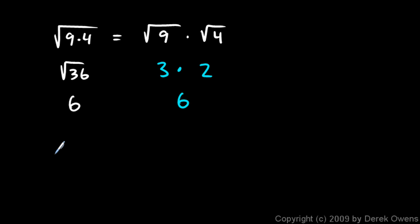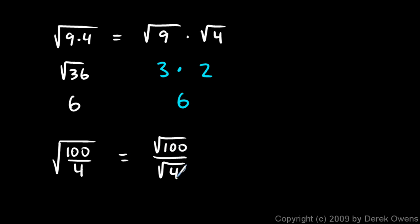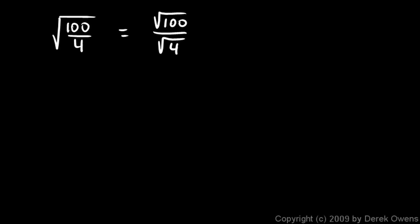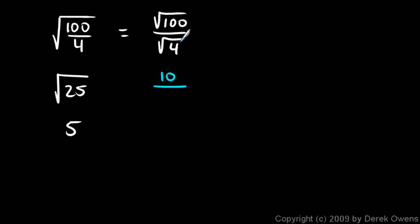Let's look at another example: the square root of 100 over 4. I'm claiming that will equal the square root of 100 over the square root of 4. On the left side, the square root of 100 over 4 is the square root of 25, because 100 over 4 is 25, and the square root of 25 is 5. On the right side, the square root of 100 is 10, and the square root of 4 is 2, so 10 over 2 is 5. Those are the same.